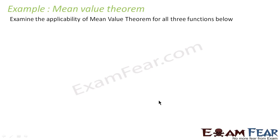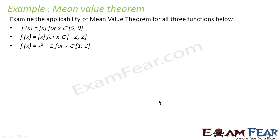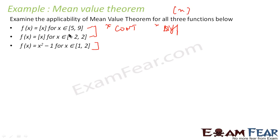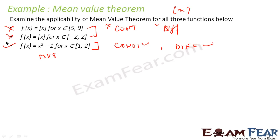Let's take the last example of this chapter. Same question which we did for Rolle's theorem, we are now doing for MVT — we have to verify the applicability of the mean value theorem. For the first two cases, not applicable, because the function is not continuous and not differentiable. But here in the third case, if you see, Rolle's theorem was not applicable because f(1) was not equal to f(2). But for MVT that third condition is not required. This function is continuous — polynomial function — and it is differentiable — polynomial function — so yes, the mean value theorem can be applied here.